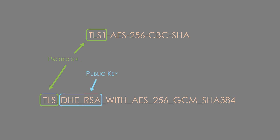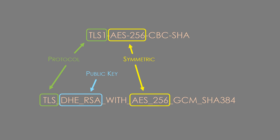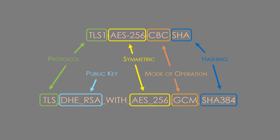Next we see the public key algorithm — in the second example this is DHE and RSA, used for exchanging session keys and for authentication. It's not uncommon for a cipher suite name to omit some details. Next is the bulk encryption cipher — AES in this example — and the size of the key it uses. The keys are exchanged using the public key algorithm. Any block cipher will need a mode of operation, which is CBC and GCM in these examples.